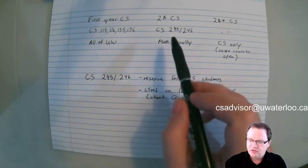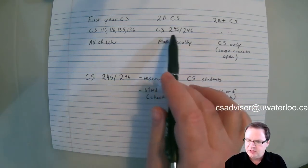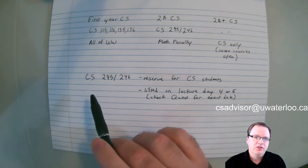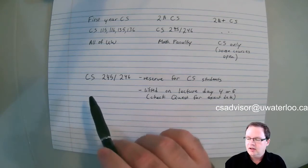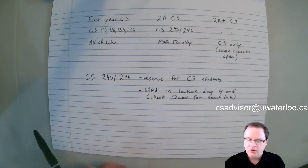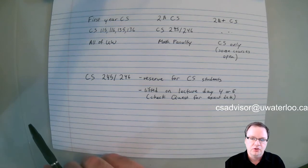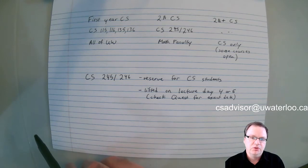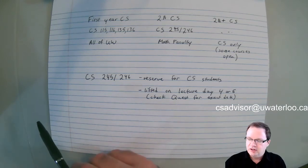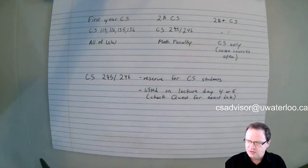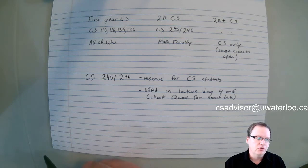And then the CS courses that are meant for 2A, namely CS245 and CS246, are restricted to the math faculty. And courses beyond that, in 2B and beyond, are only for CS students. There are some notable exceptions to that. There are certain courses that are open to students in the math faculty, for example, courses like CS371 or CS467. But in general, courses beyond 2A, so 2B and beyond, are for CS students only.